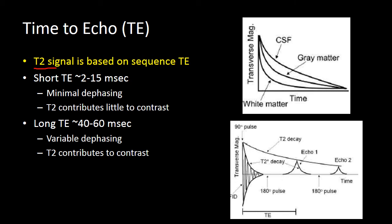In the end, our T2 signal is based on our sequence's TE. If we have a very short TE on the order of a few milliseconds, we haven't allowed for separation of different tissue types based on their dephasing, so T2 properties contribute very little to contrast. If we have a long TE, we have allowed other tissues like white matter and gray matter to dephase, and if we go very long, those structures will have almost no signal. But fluid-filled structures, which take a long time to dephase, will still have signal, maximizing contrast based on the T2 dephasing properties of different tissue types.